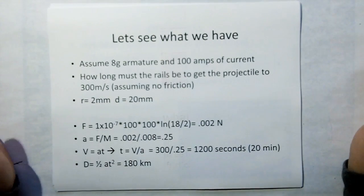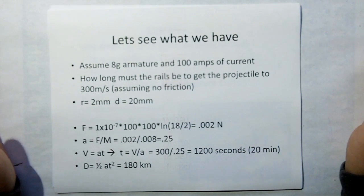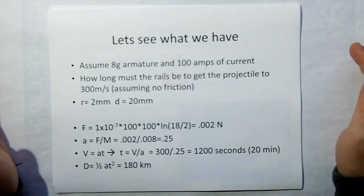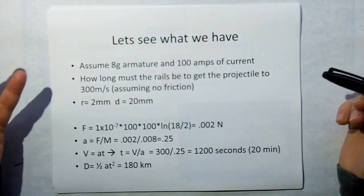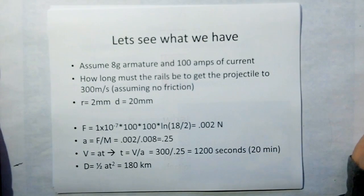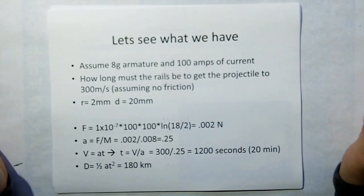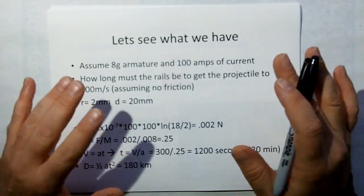When you do the calculations, you'll need 1.8 kilometers of rail. That's for 100 amps of current. So you can see why these railgun projects are very, very inefficient. Just to get a decent amount of force, you need thousands of amps. I think some designs today are using millions of amps. This is ridiculous.